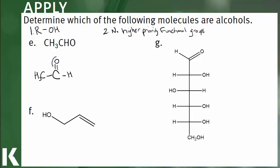F has a hydroxyl, so it meets the first criteria. There is a double bond, but alkenes are a lower priority functional group than a hydroxyl, so this is an alcohol.